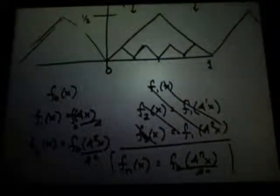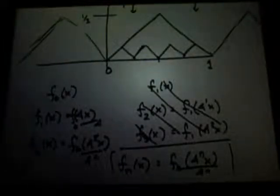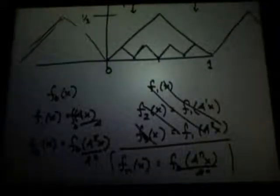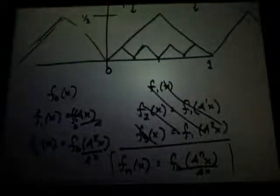So f sub zero is one half unit high and f sub one is an eighth of a unit high and f sub two is a thirty-second high. So they're dropping by a factor of four. They're accordion together so that the next one is always four jumps where the last one had one jump. Every tooth of the last one becomes four teeth and the teeth become one fourth as high.